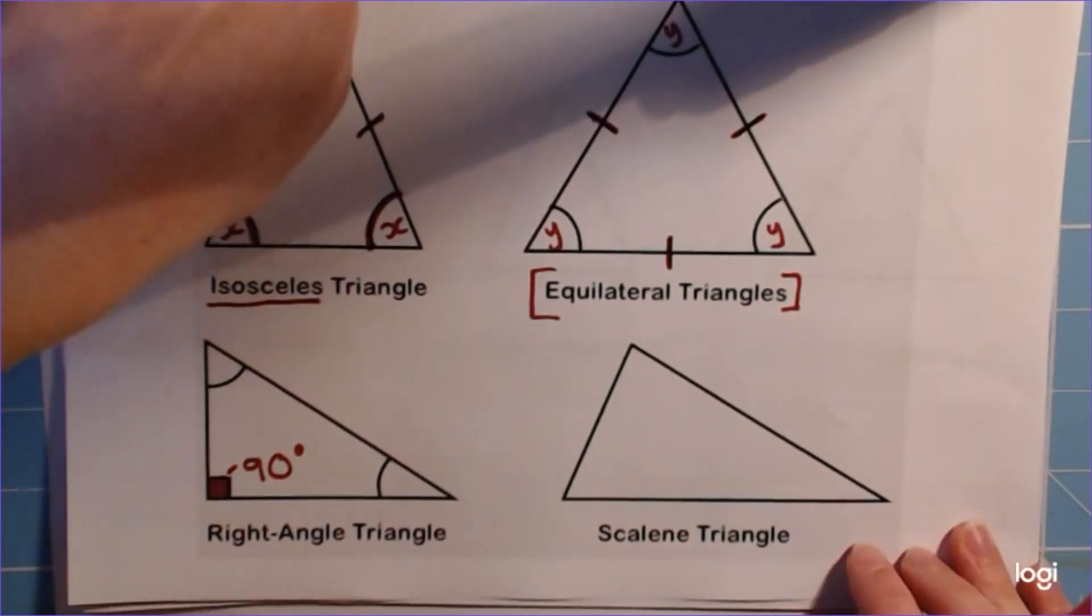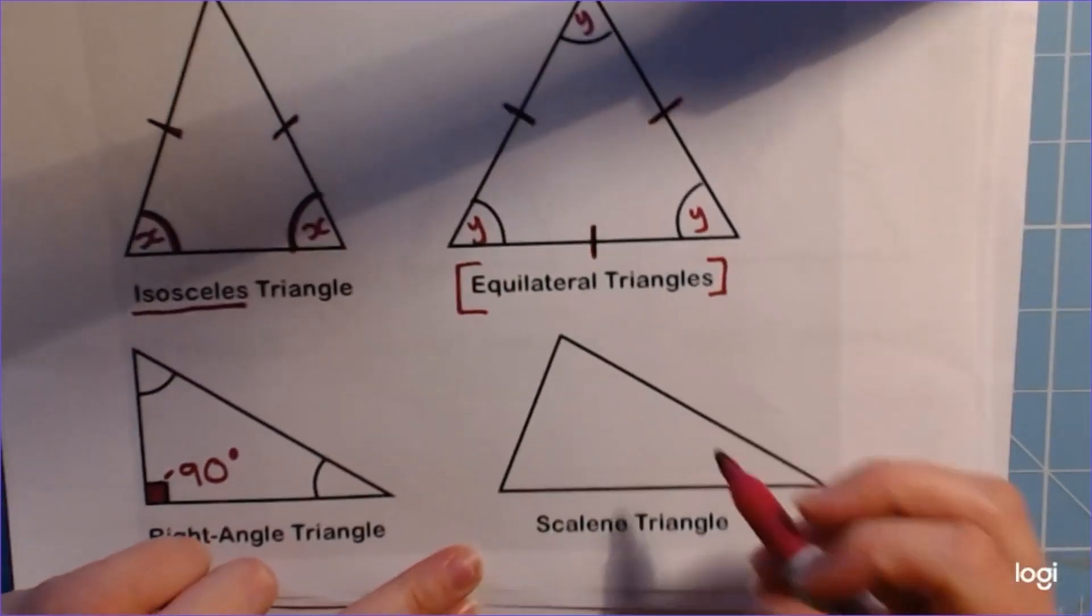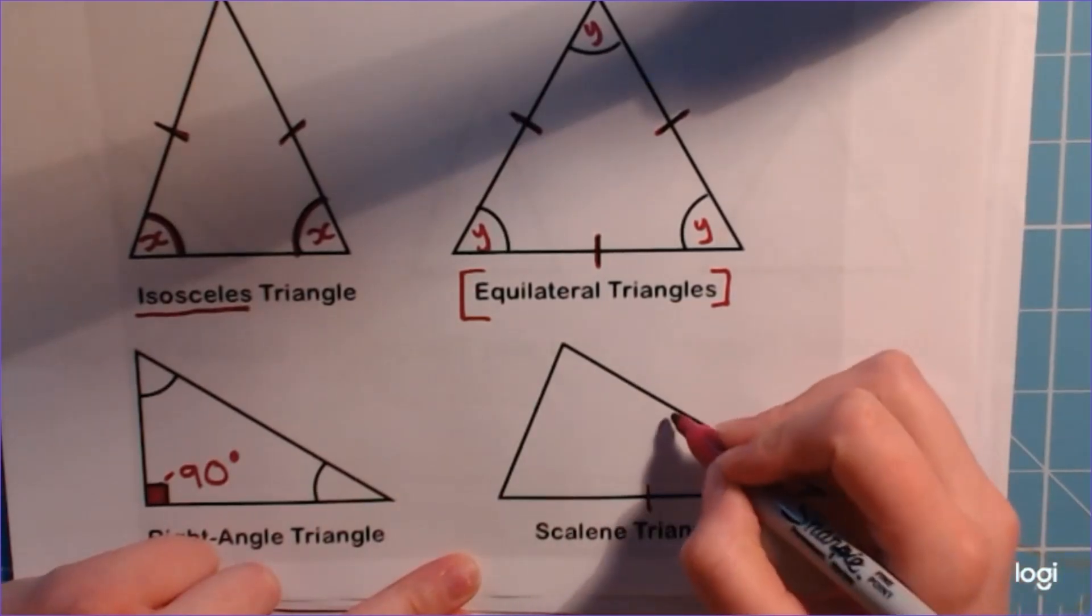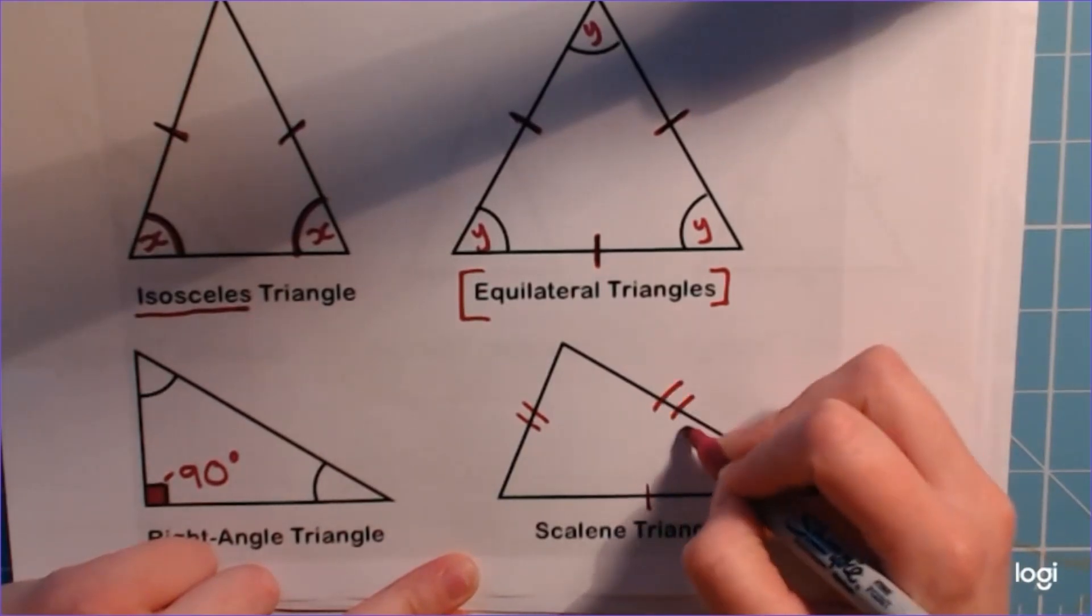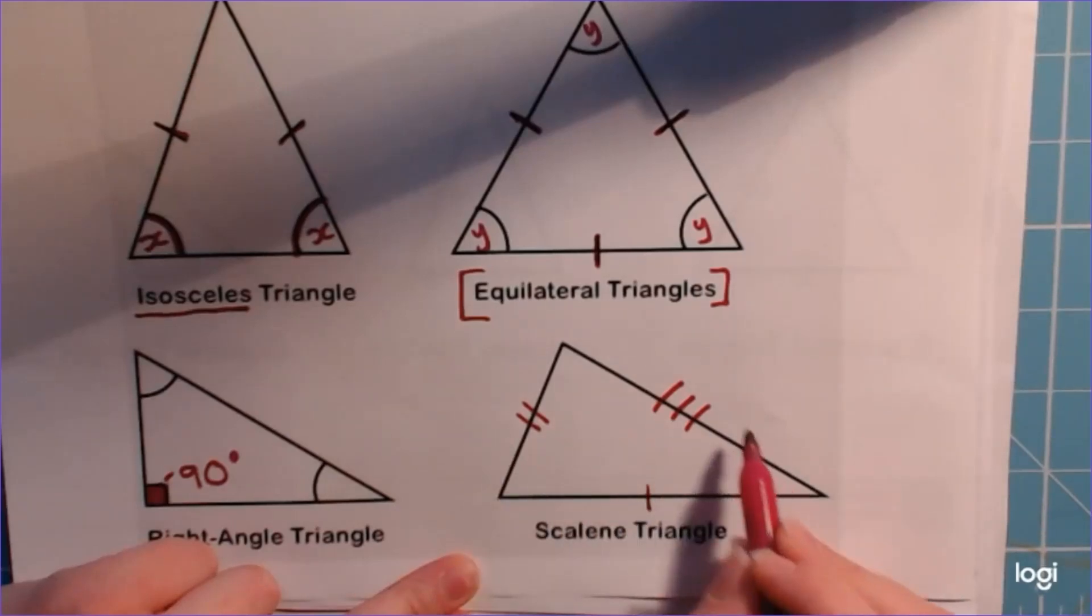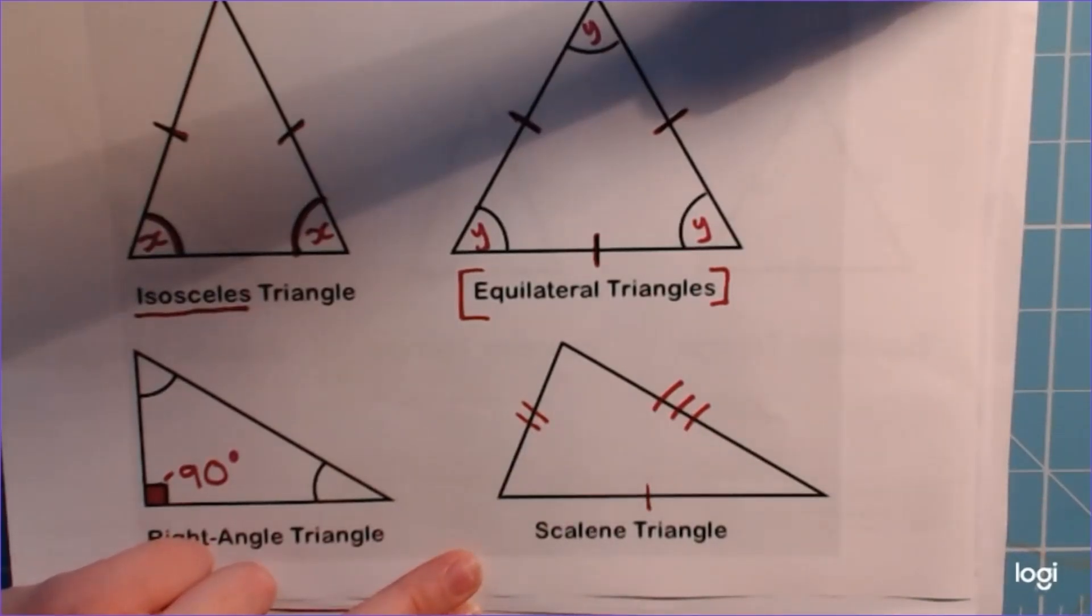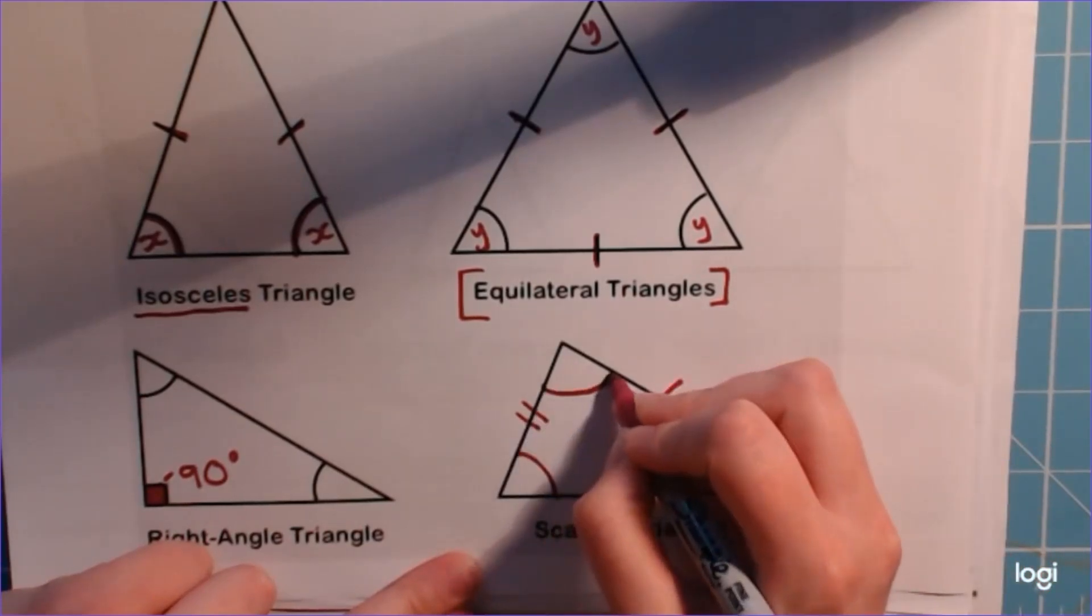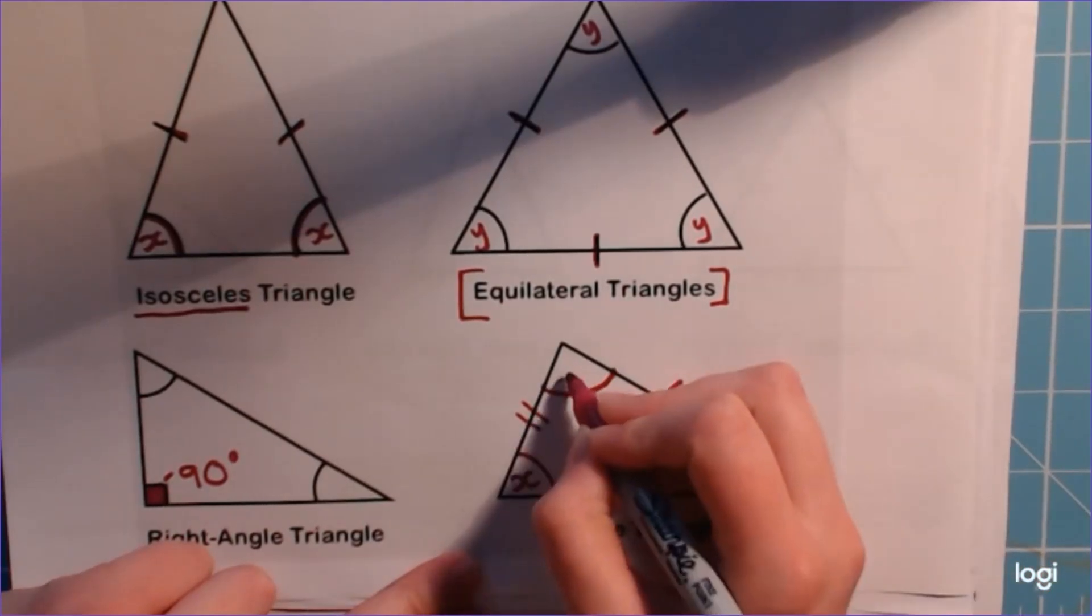The last one we've got here is a scalene triangle. A scalene triangle is kind of like a leftover triangle really, it's a triangle which doesn't fit any other definition. We've got three different sides, I'm going to represent them like this, so this is one length, this is a different length so I've put two on, and this is a different length again so I've used three little bars to represent that. We get not only three different side lengths but also three different angles, so I guess we could call them X, Y, and Z just so we know that they're all different.